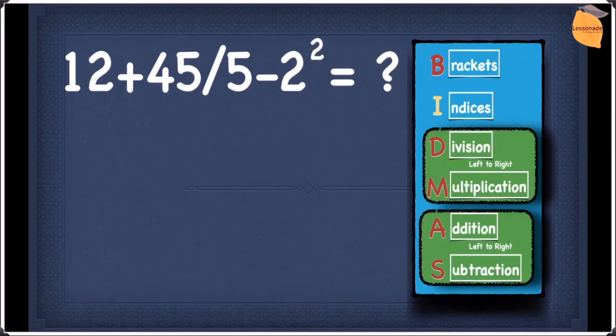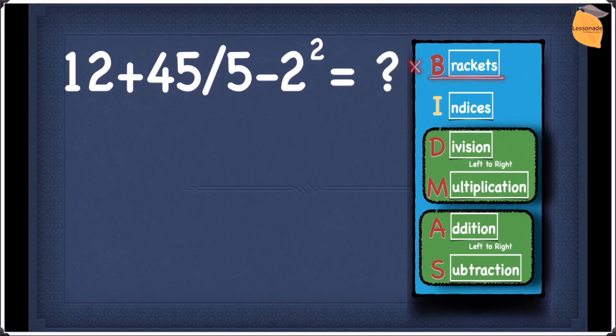Now let's have a look at this example. In this example, let's first see if you have any brackets. We have no brackets in this example, so let's move on to indices. Do we have any indices? We do have indices — we have one right here.